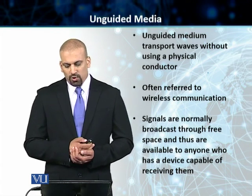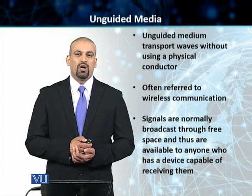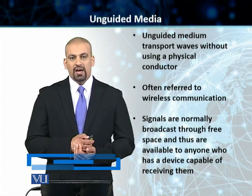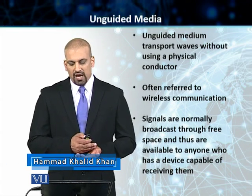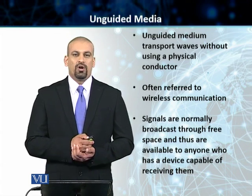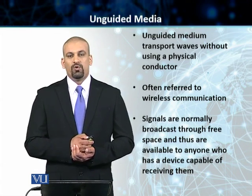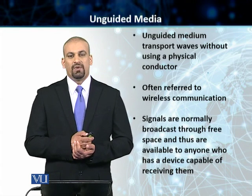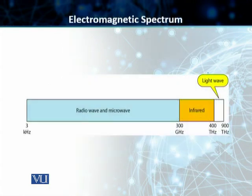In the case of unguided media, we transport waves without using a physical conductor or a conduit. This is referred to as wireless communication. We use signals to broadcast through free space, and therefore they are available to anyone who has a suitable receiver and is capable of receiving them. We will look at the part of the electromagnetic spectrum that ranges from 3 kilohertz to 900 terahertz — this is our electromagnetic or wireless spectrum normally used in unguided communication.